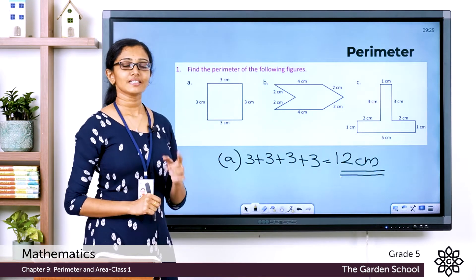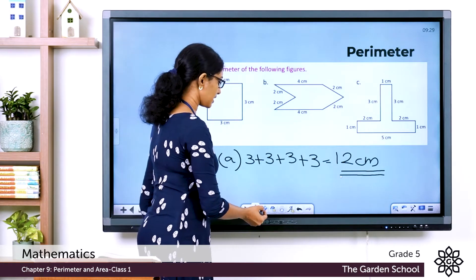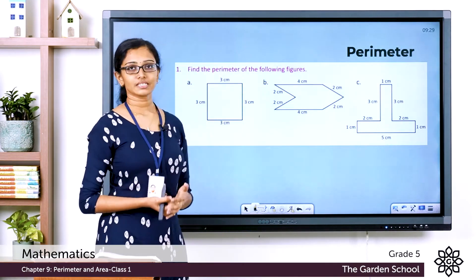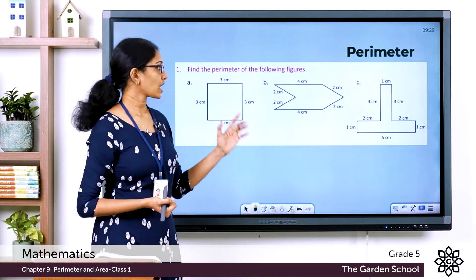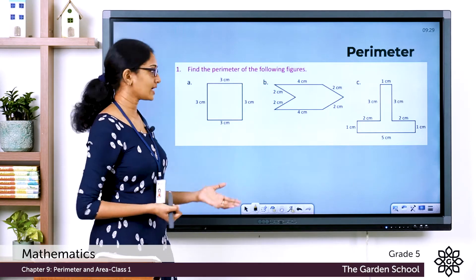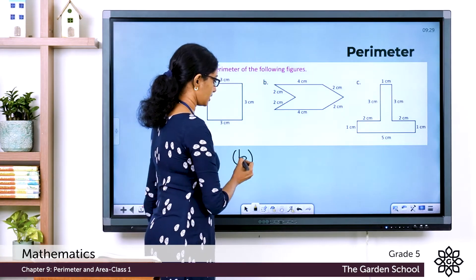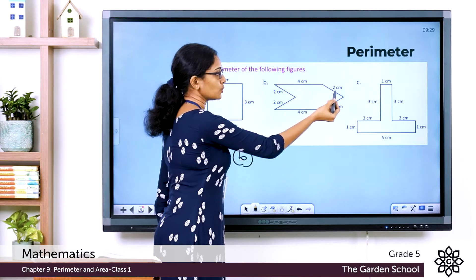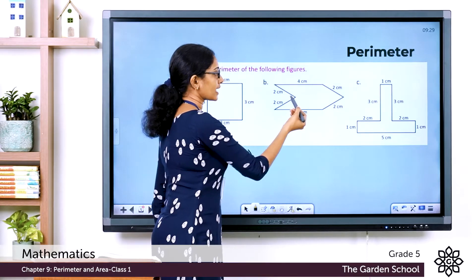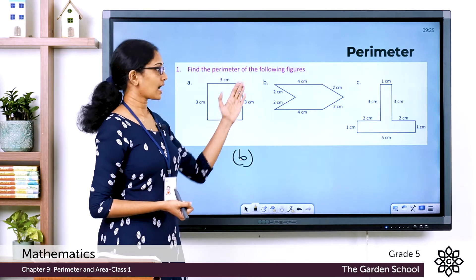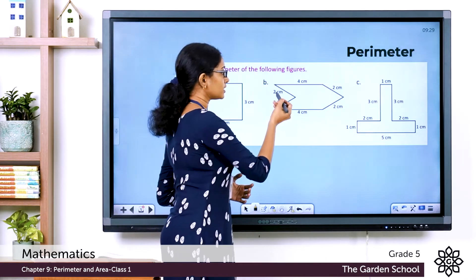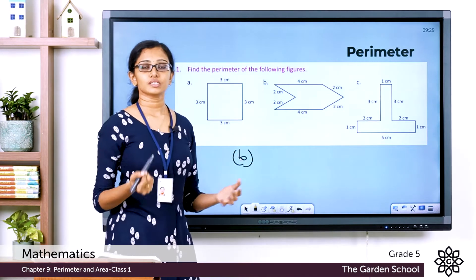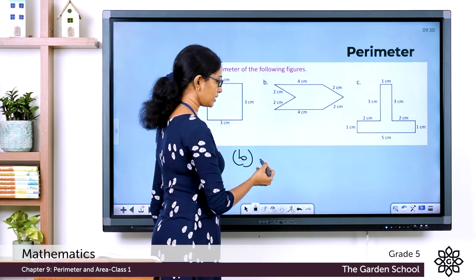For Question B, we have a figure with straight sides and measurements given in centimeters. Let's find the perimeter by adding the length of all its sides: 2 + 4 + 2 + 2 + 4 + 2. That gives us 2 + 4 = 6, + 2 = 8, + 2 = 10, + 4 = 14, + 2 = 16 centimeters.